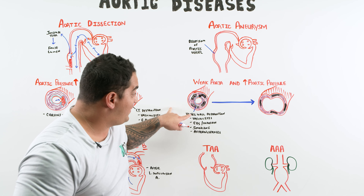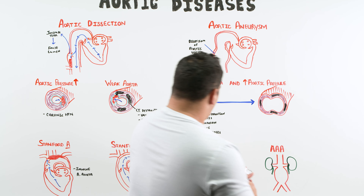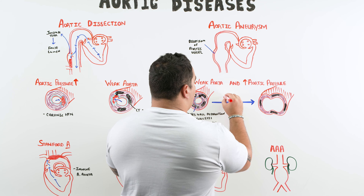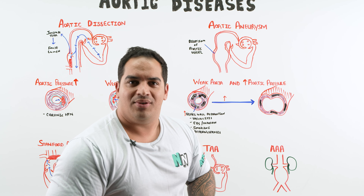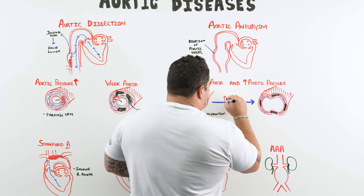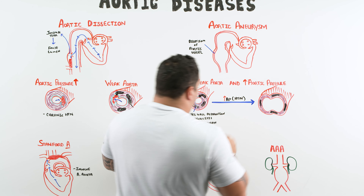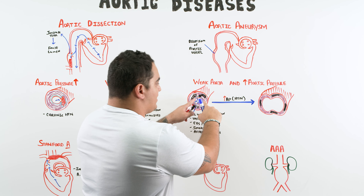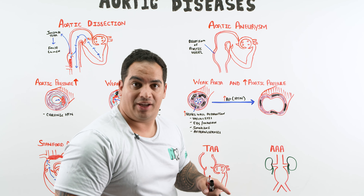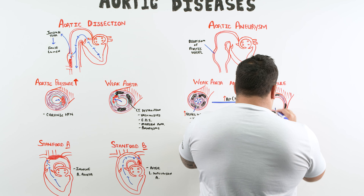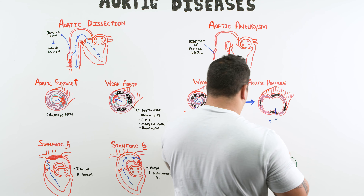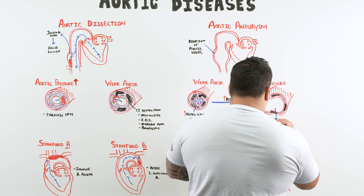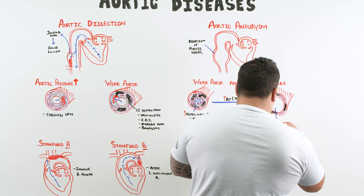Once the vessel wall is weakened from this destruction, if you then increase aortic pressure — for example with hypertension — the pressure exerted on that weak wall increases, causing dilation. So a weak vessel wall combined with elevated aortic pressure leads to excessive dilation of the aortic vessel.